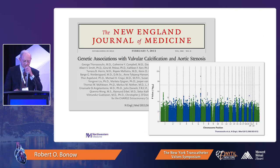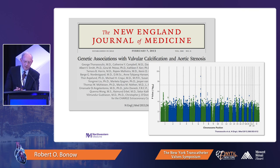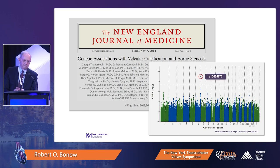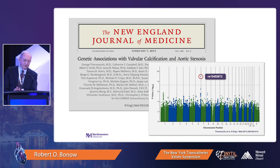We also have genetic data from Thanasoulis and co-workers in a large GWAS study of roughly 50,000 individuals, with validation across the world, demonstrating a single SNP sitting on chromosome 6 that is highly associated with aortic valve calcification. This is in the locus of LPA, the gene that codes for circulating levels of Lp(a).